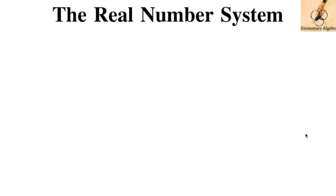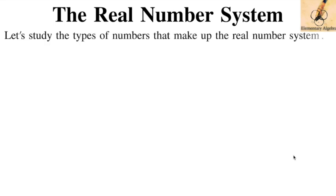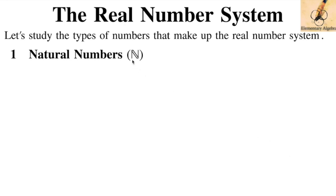The real number system is a system of numbers used in algebra and all the higher maths you will be taking up. We will start with the types of numbers that make up the real number system. We'll start with the natural numbers, also called the counting numbers or the set of positive integers, denoted by the double-script N, or simply N.